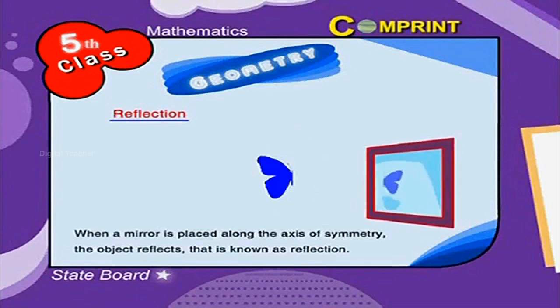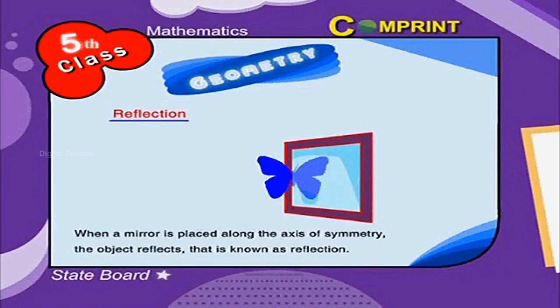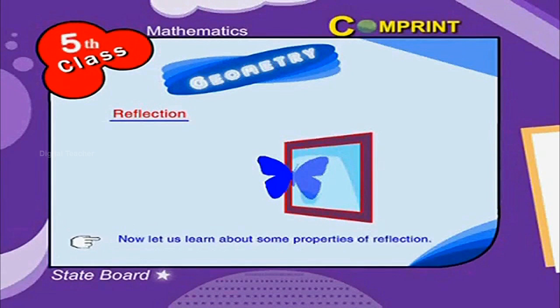Reflection: When a mirror is placed along the axis of symmetry, the object reflects. That is known as reflection. Now let us learn about some properties of reflection.